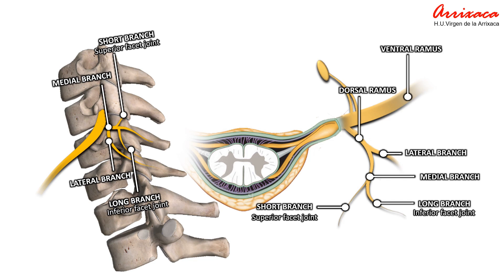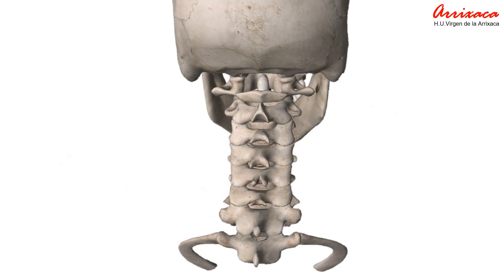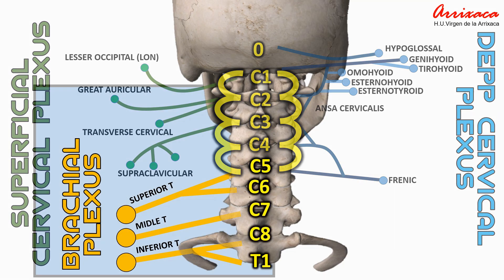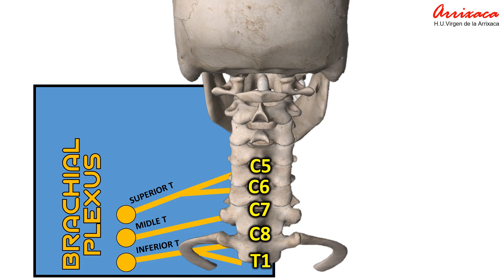The anterior branch of a cervical spinal nerve carries motor signals from the spinal cord to muscles and glands in the front of the body. These branches contribute to the formation of nerve plexuses, which are complex nerve networks supplying different regions. The ventral ramus of cervical spinal nerves will be the starting point to the superficial and deep cervical plexus and the brachial plexus.